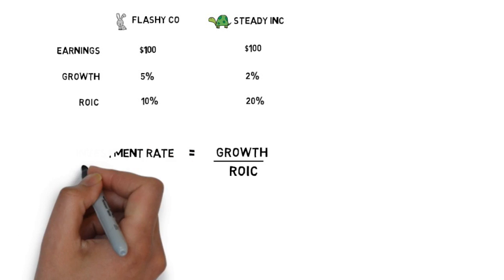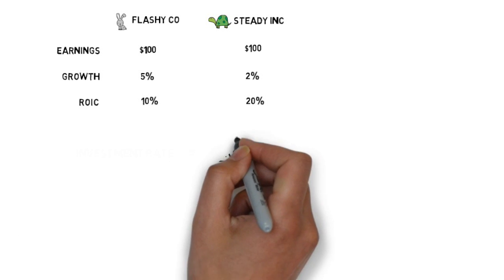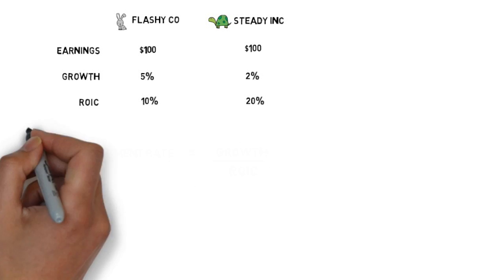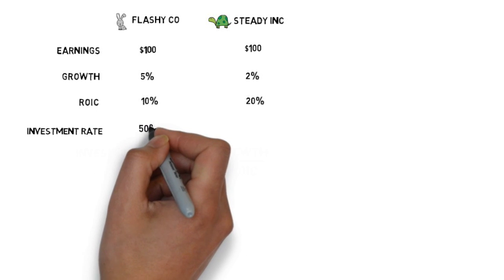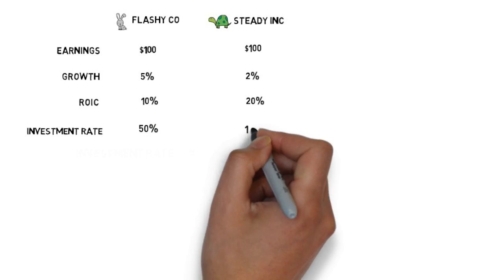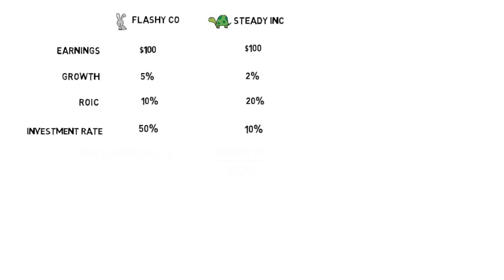So let's go ahead and work out the investment rate for FlashyCo and for SteadyInc. We can see that FlashyCo has a much higher investment rate. Because of a lower return on invested capital, the future growth at FlashyCo requires far more capital to fund its future growth — it's more capital intensive.